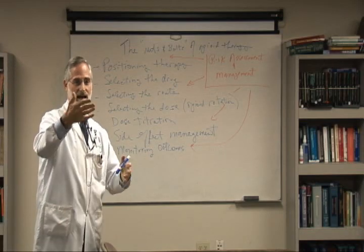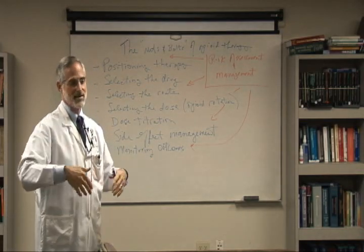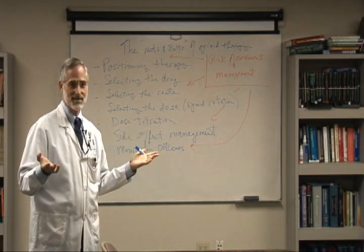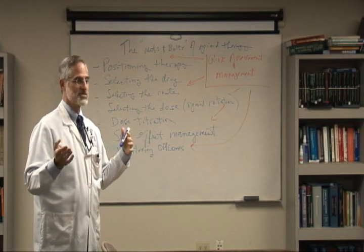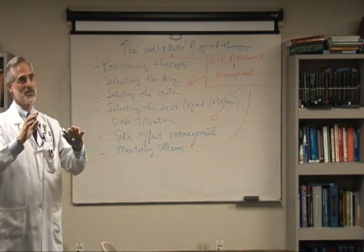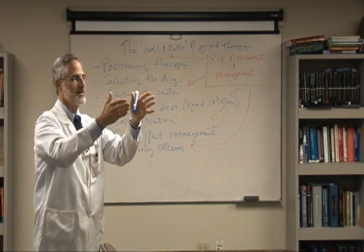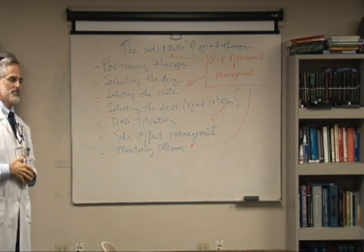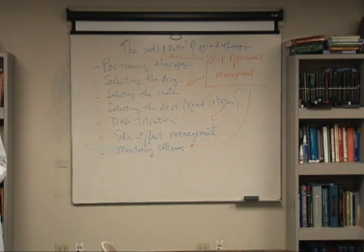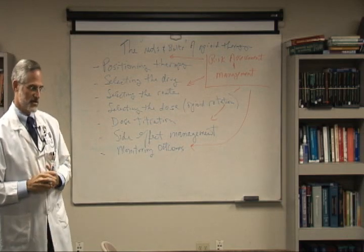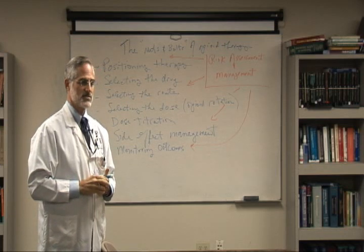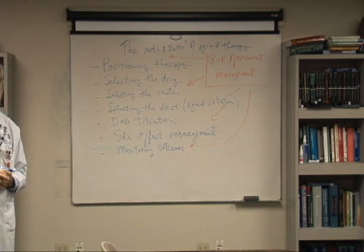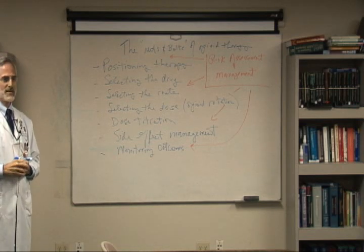So if you ever get asked, for example, in a court of law, why did you select an opioid for this patient with acute pain? And you go, well, the WHO ladder. First of all, the judge is going to stand up and say, don't call it the WHO ladder. It's not WHO. It's World Health Organization or WHO. And then the judge is going to say, but doctor, wasn't that ladder developed by an expert panel to talk about pain control in patients with advanced cancer? And you'd say yes. And the judge would say, well, what's the evidence base for translating that to positioning therapy for acute pain? And you would say, okay.